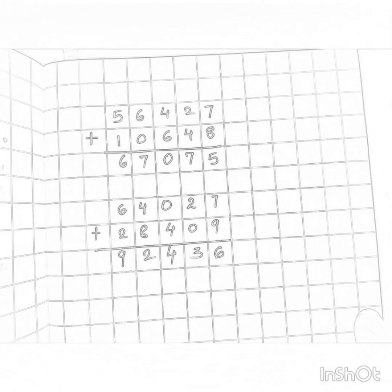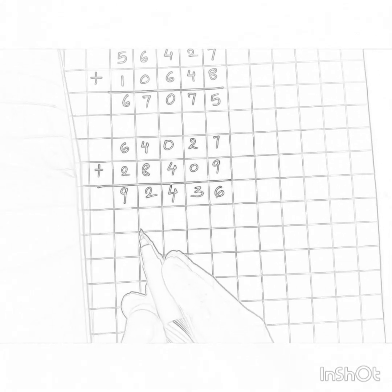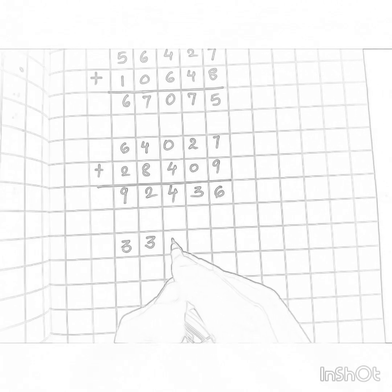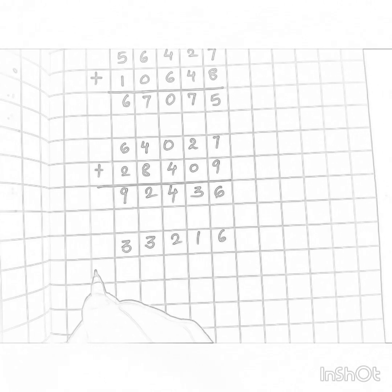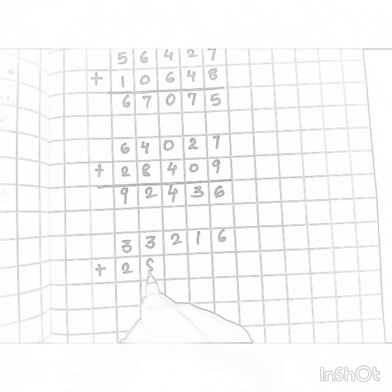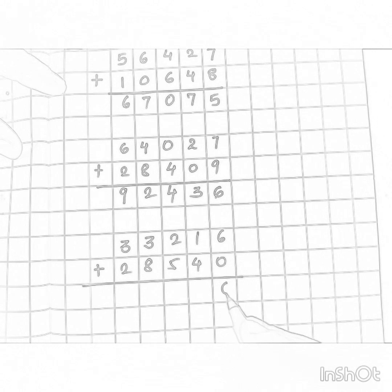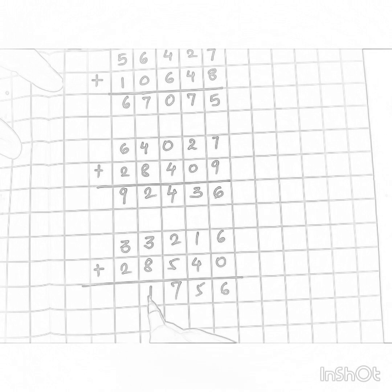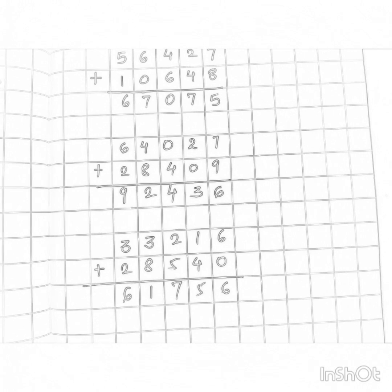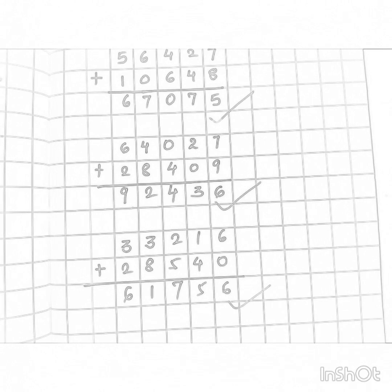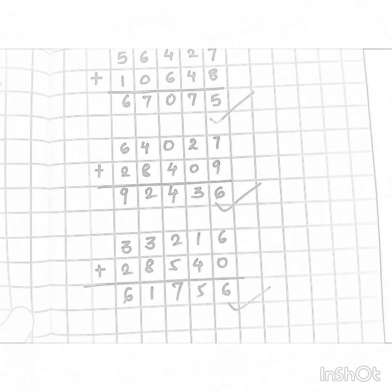Let us solve the last example: thirty three thousand two hundred and sixteen plus twenty eight thousand five hundred and forty. Six plus zero is six. One plus four is five. Five plus two is seven. Eight plus three is eleven, carry one. So: four, three, four, five, five, six. The answer is sixty one thousand seven hundred and fifty six.